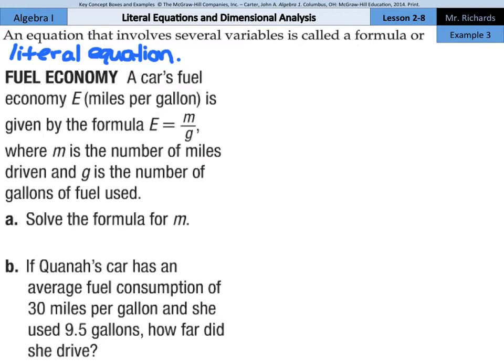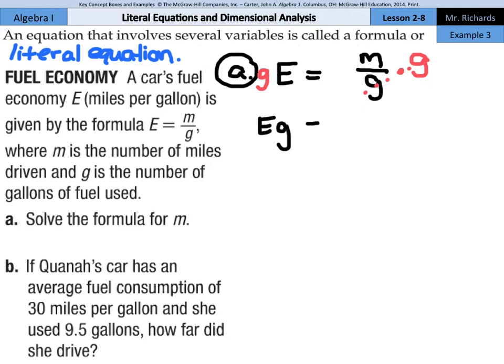Let's start with that part. If we have E equals M divided by G, in order to solve this formula for M, we need to multiply by that G on both sides of the equation. And so we're left with E times G equals our M. Could you also write it M equals E times G? Sure.